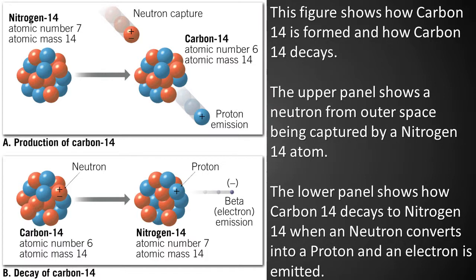This figure shows how carbon-14 is formed and how it decays. The upper panel shows a neutron from outer space being captured by a nitrogen-14 atom; the atom then emits a proton and becomes the isotope carbon-14. The lower panel shows how carbon-14 decays to nitrogen-14 when a neutron converts into a proton and an electron is emitted. Note how the atomic number, based on the number of protons, changes, while the atomic mass — protons plus neutrons — stays the same.